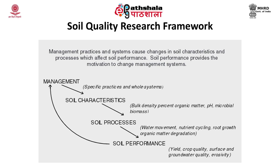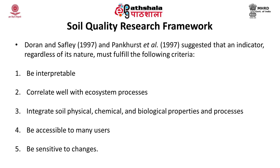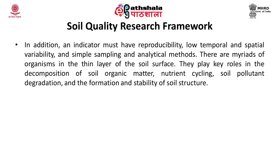These indicators are dynamic soil properties that are very sensitive to land management, natural disturbance and chemical contaminants. Doran and Seffley and Harsh et al. 1997 suggested that an indicator, regardless of its nature, must fulfill the following criteria: be interpretable; correlate well with ecosystem processes; integrate soil physical, chemical and biological properties and processes; be accessible to many users; and be sensitive to changes. In addition, an indicator must have reproducibility, low temporal and spatial variability, and simple sampling and analytical methods.